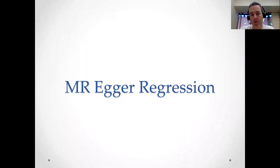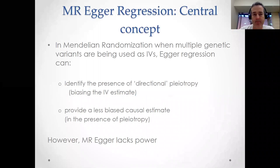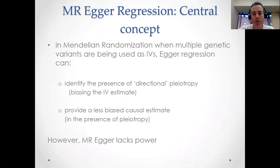Let's talk about the first pleiotropy-robust method, called MR Egger regression. MR Egger regression is useful in two respects.